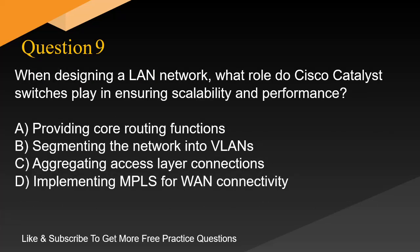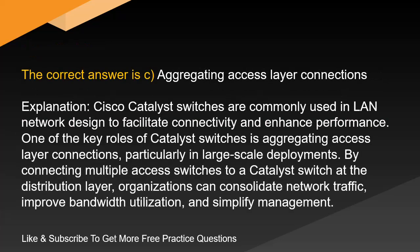Question 9. When designing a LAN network, what role do Cisco Catalyst switches play in ensuring scalability and performance? A. Providing core routing functions. B. Segmenting the network into VLANs. C. Aggregating access layer connections. D. Implementing MPLS for WAN connectivity. The correct answer is C: aggregating access layer connections. Cisco Catalyst switches are commonly used in LAN network design to facilitate connectivity and enhance performance. One of the key roles of Catalyst switches is aggregating access layer connections, particularly in large-scale deployments. By connecting multiple access switches to a Catalyst switch at the distribution layer, organizations can consolidate network traffic, improve bandwidth utilization, and simplify management.